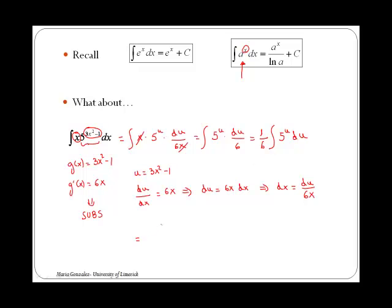The integral of 5 to the u du is just 5 to the u over ln of 5 plus the constant of integration.